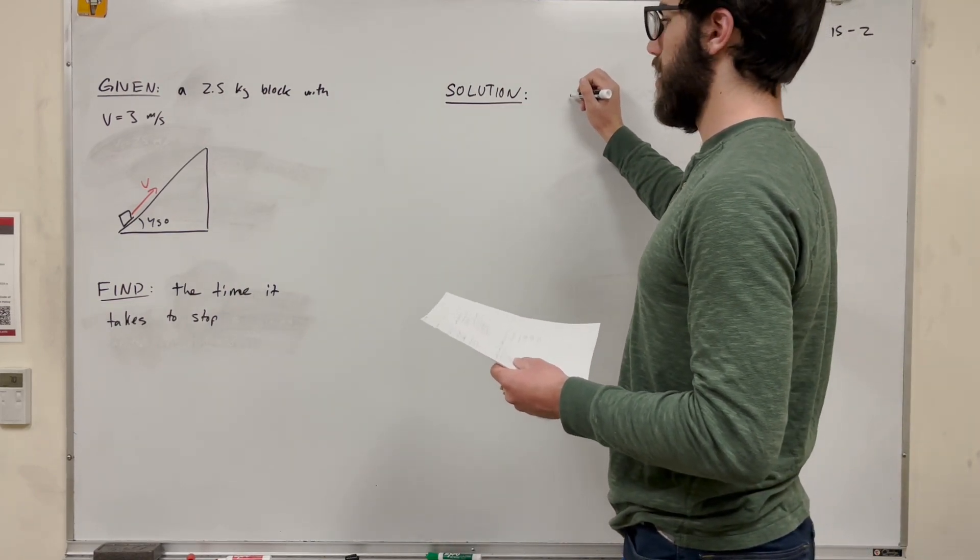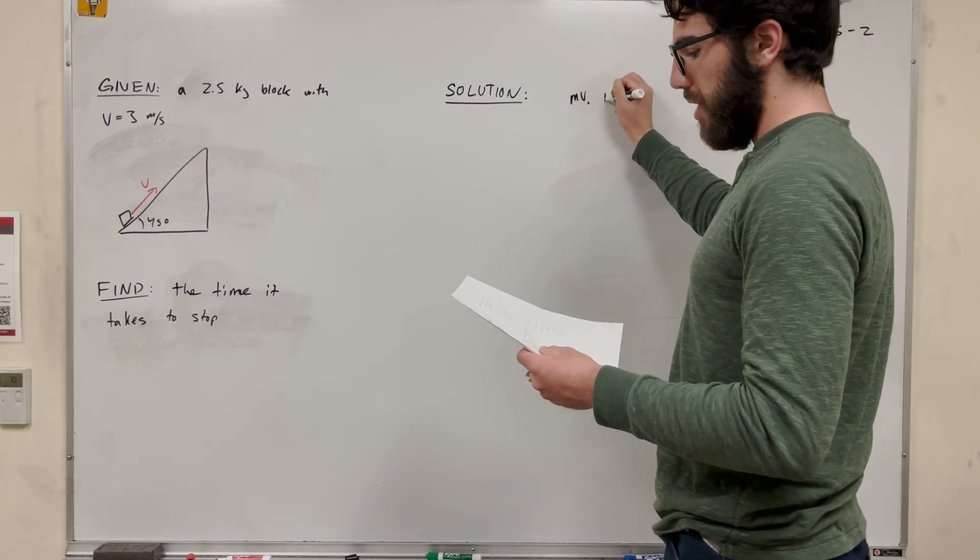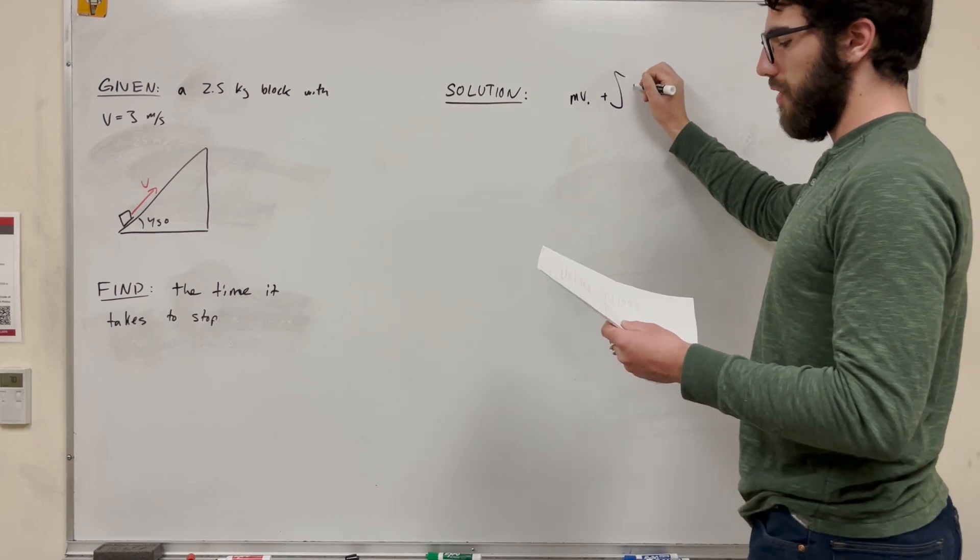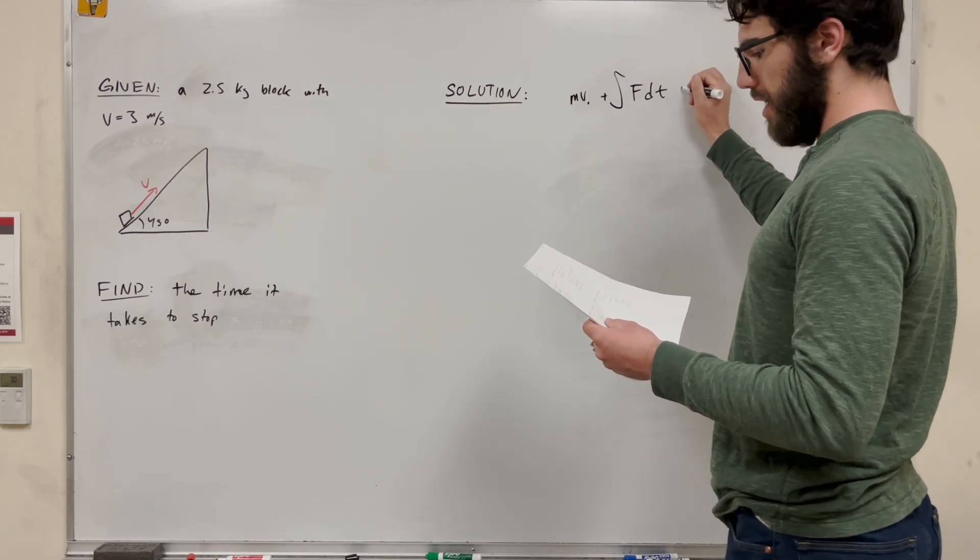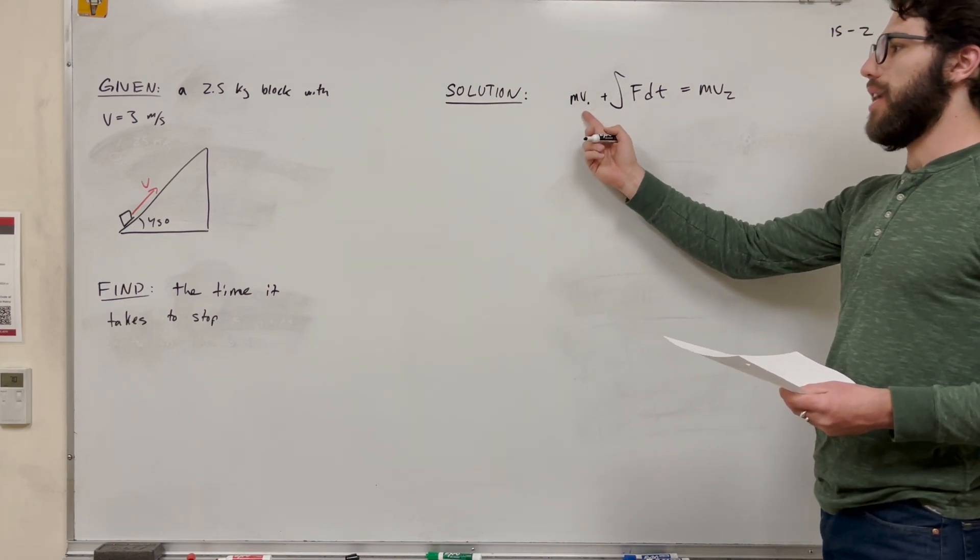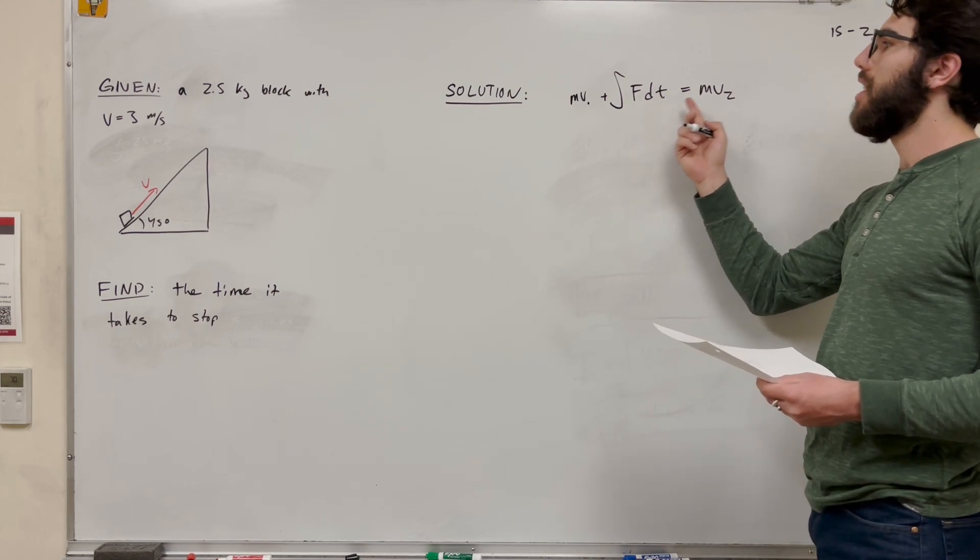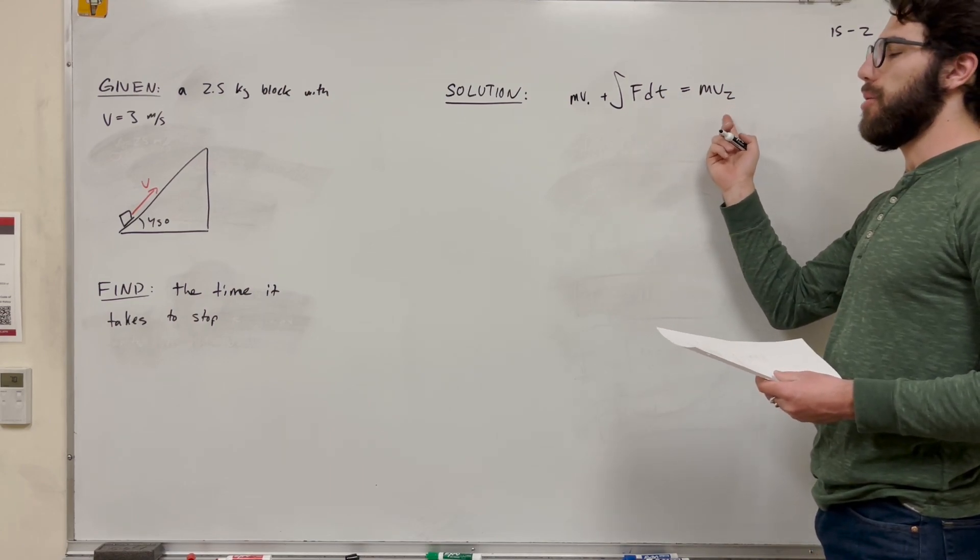Mass times velocity 1 plus the integral of the force times change of time is equal to mass times velocity 2. So this is saying, basically, whatever momentum is at the beginning plus whatever changes we do times the time we do it on, it's going to be the final momentum.